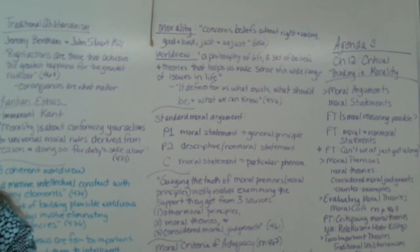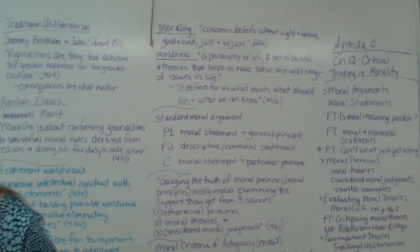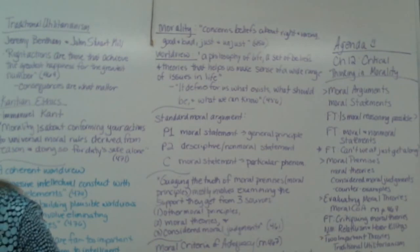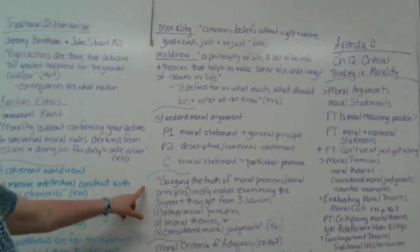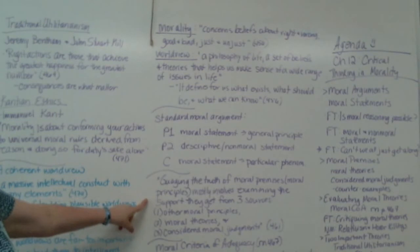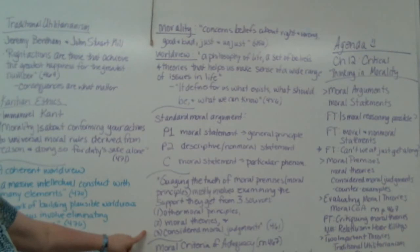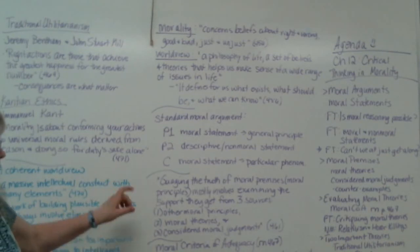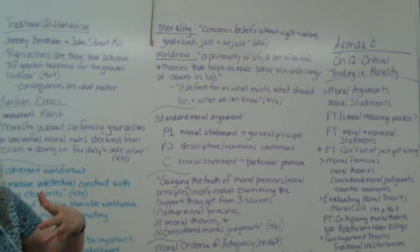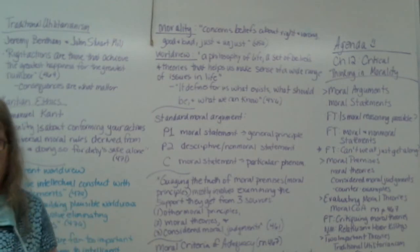On page 461, looking at moral premises — gauging the truth of moral premises mostly involves examining the support they get from three sources: other moral principles, moral theories, and considered moral judgments. Moral principles include that list, as well as things like we shouldn't lie, cheat, or steal.